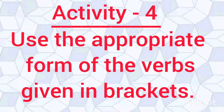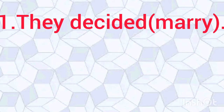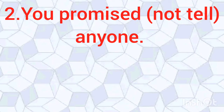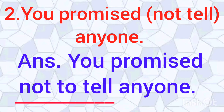Now, we will proceed towards activity 4. Use the appropriate form of the verb given in brackets. Number 1: They decided (marry). The answer would be: they decided to marry. Number 2: You promised (not tell) anyone. The answer would be: you promised not to tell anyone.